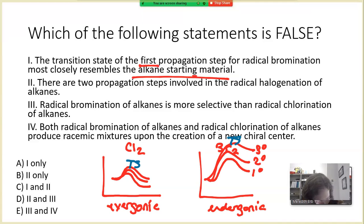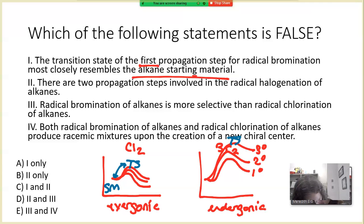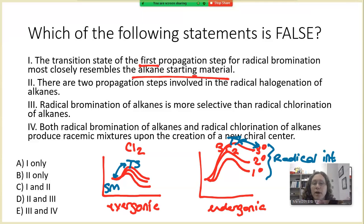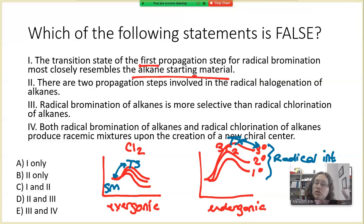In chlorination, the transition state is closer in energy to the starting material, so it mostly looks like the alkane and is not very selective. In bromination, the transition state is closer in energy to the radical intermediate, so it resembles the radical intermediate. Because of that, we see different stabilities for a primary, secondary, or tertiary transition state, and the transition state structure looks more like a radical.